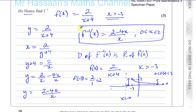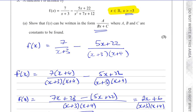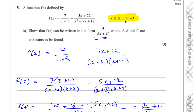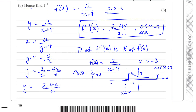Therefore, the domain of the inverse function is x is between 0 and 2, with x a real number. It's very important to state the domain of your inverse function when the domain of the original function was restricted. Remember: the range of the original function is the same as the domain of the inverse function.